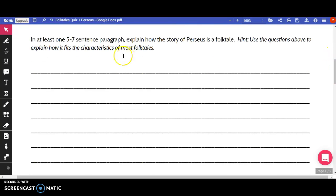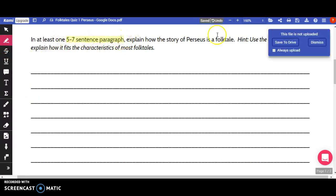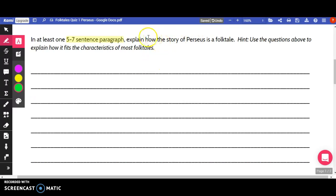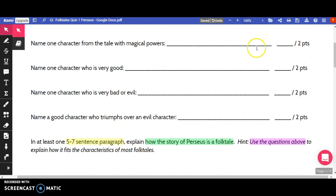The next question says, Explain how the story of Perseus is a folktale. So the topic of your paragraph needs to be how the story of Perseus is a folktale. And I give you a hint to use the questions above to explain how it fits the characteristics of most folktales. When you read The People Could Fly, we talked about the characteristics of folktales. And those characteristics of folktales just happen to be the same as the characteristics gone over in these four questions.